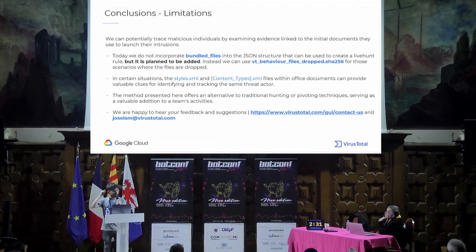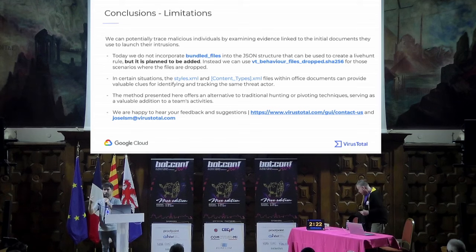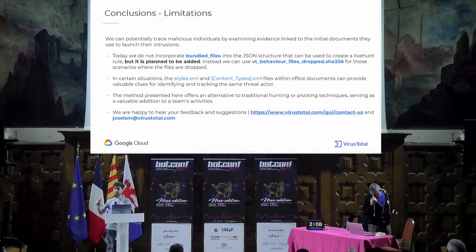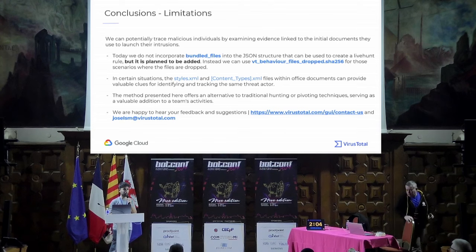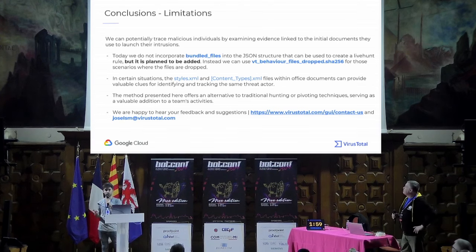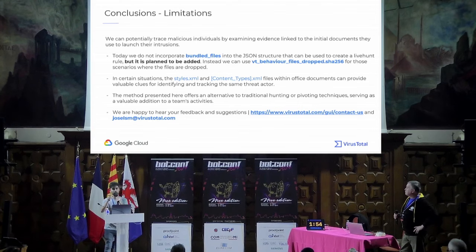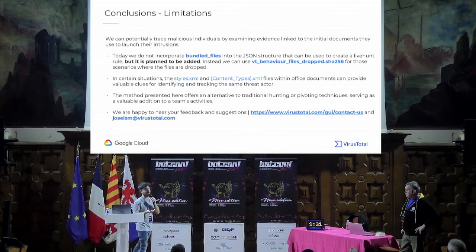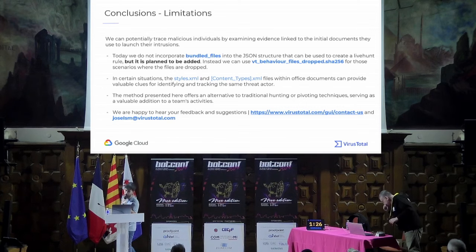Conclusions: we can potentially trace malicious activity just by tracking artifacts like content types, styles, and images — but I'm sure there are other interesting artifacts to take into account as well. We don't yet incorporate bundle files into the JSON structure to create livehunt rules, but we're working on it and you'll have that in the future. For drop files, you can already create livehunt rules in VirusTotal. In certain situations, styles and content types can provide valuable clues for identifying new threat actor activity. The method presented here offers an alternative, complementary way to do threat hunting — not the definitive way, but a useful addition.